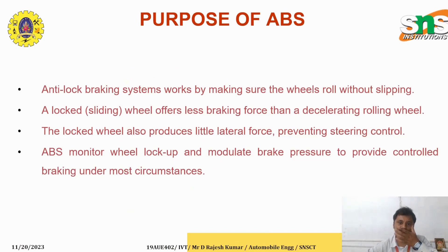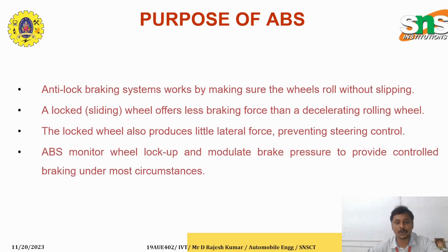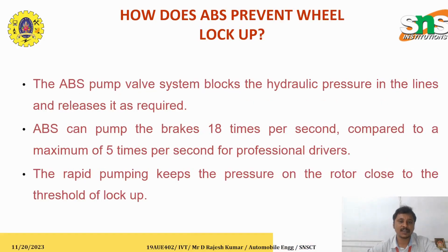The Anti-lock Braking System works by ensuring that wheels roll without slipping. A locked wheel offers less braking force than a decelerating rolling wheel. The locked wheel also produces little lateral force, preventing steering control. The ABS system monitors wheel lock-up and modulates the brake pressure to provide controlled braking under most circumstances.